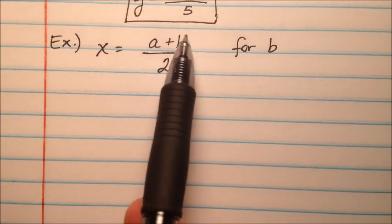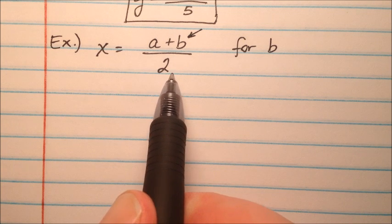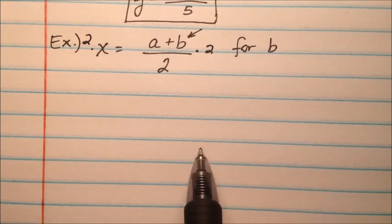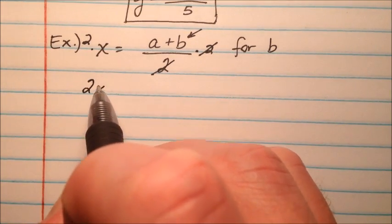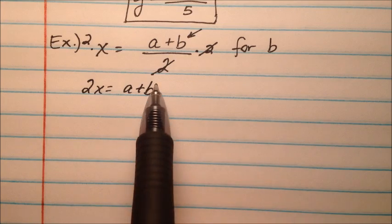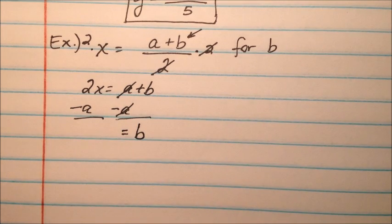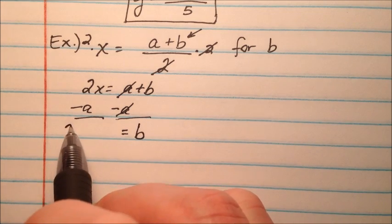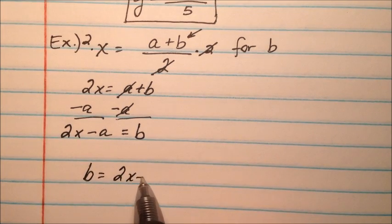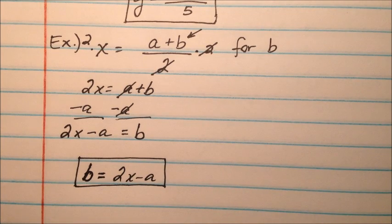In the next example, x equals the quantity a plus b all over 2, and I want to solve for b. My b is trapped inside the fraction, so I multiply both sides by 2 to get rid of the denominator. The 2s on the right cancel, and on the left I have 2x, which equals a plus b. Now I subtract a from both sides — those cancel — leaving just b on the right. Since x and a are not like terms, the left side is 2x minus a. Using the symmetric property: b equals 2x minus a.